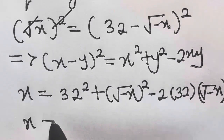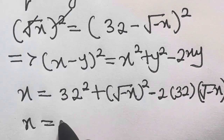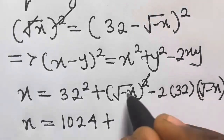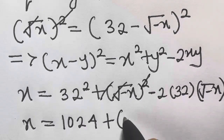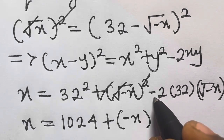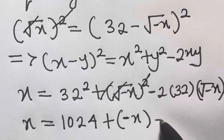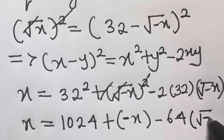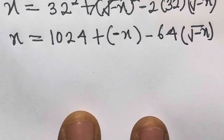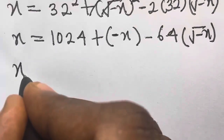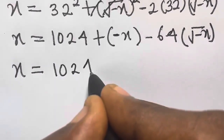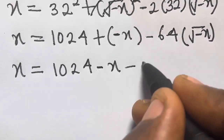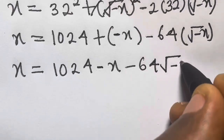So x equals 1024 plus, and we cancel (√(−x))² to get just minus x, and minus 2 times 32 gives us minus 64, times square root of minus x. So we have x = 1024 − x − 64√(−x).